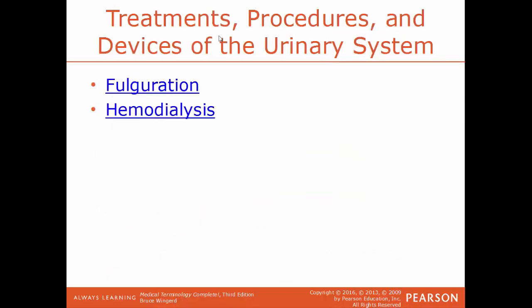Fulguration is a process used to remove malignant tumors or growths by using a high-frequency current. The heat from this high current destroys these growths or tumors. Hemodialysis is a medical procedure used to remove waste products and fluid from the blood and to correct any electrolyte imbalances — basically the same thing as having an artificial kidney. It's commonly used for people who have kidney failure, when their kidneys can't filter the material on their own.